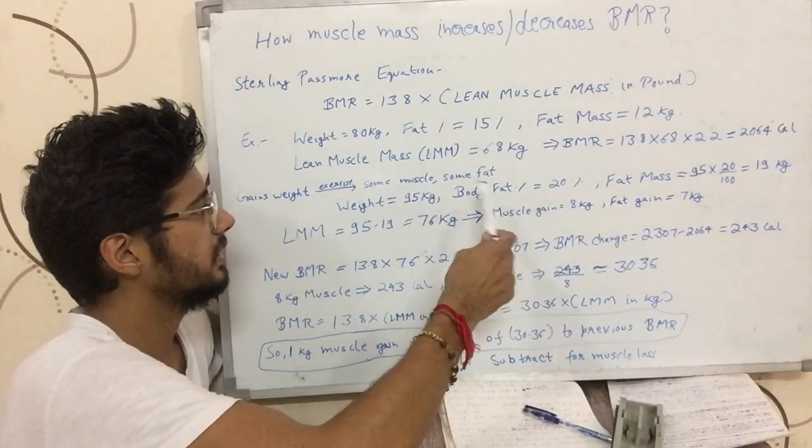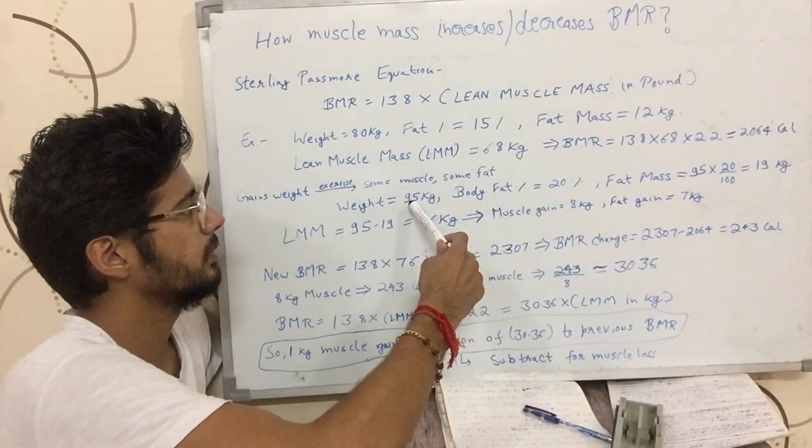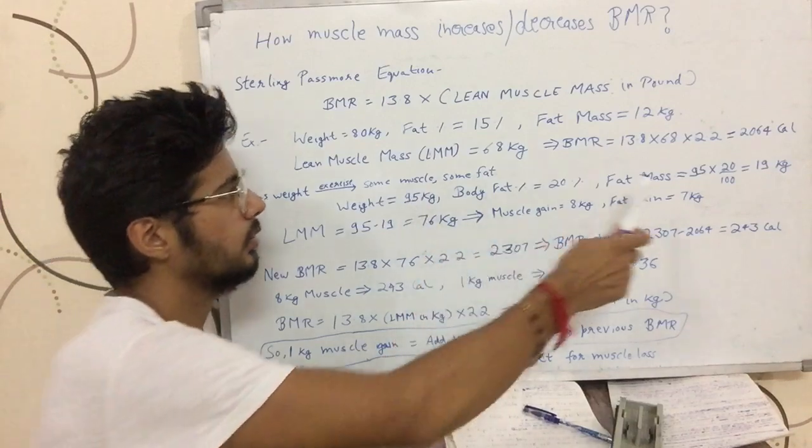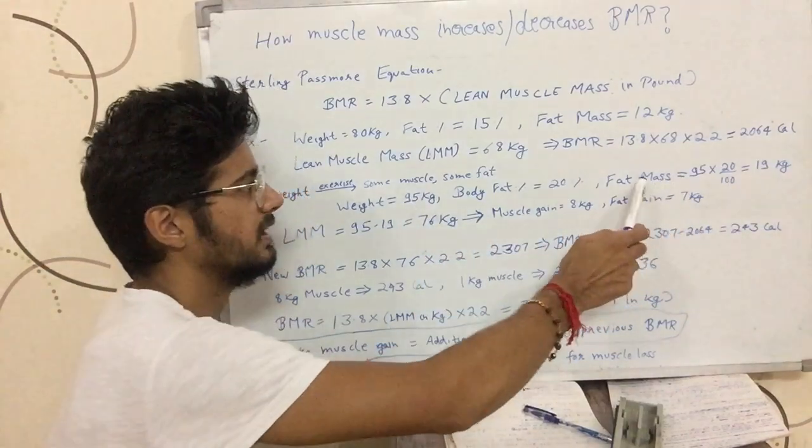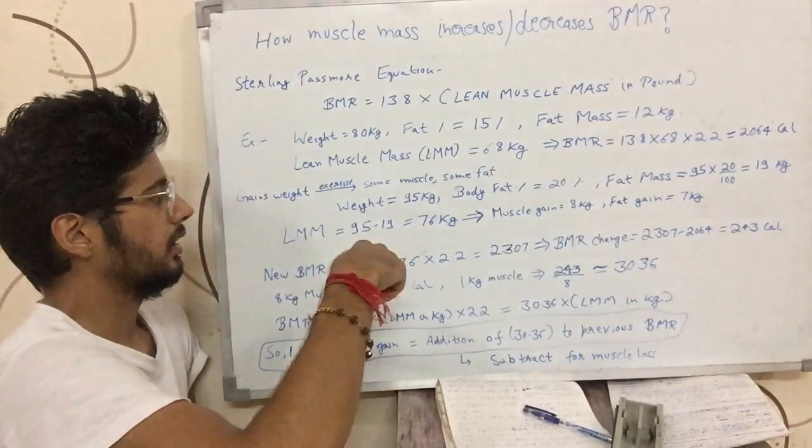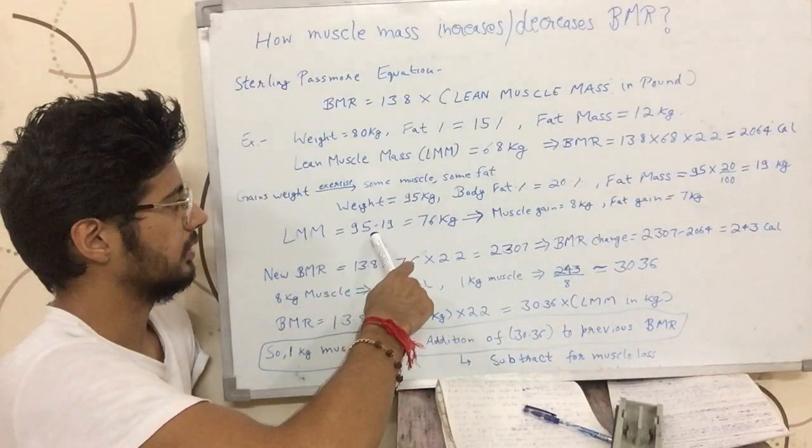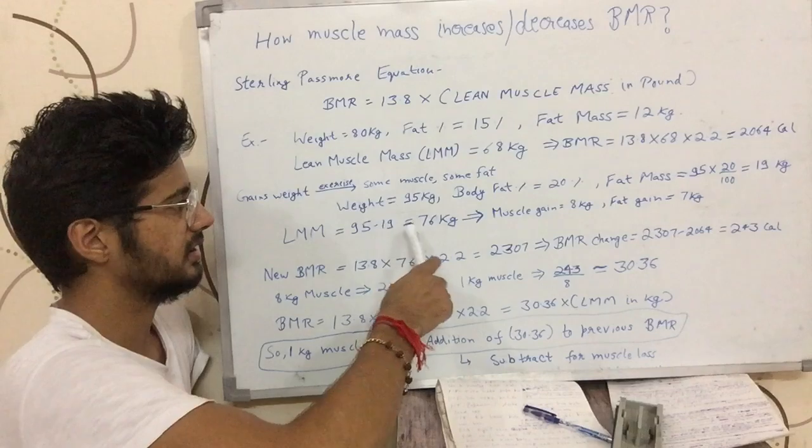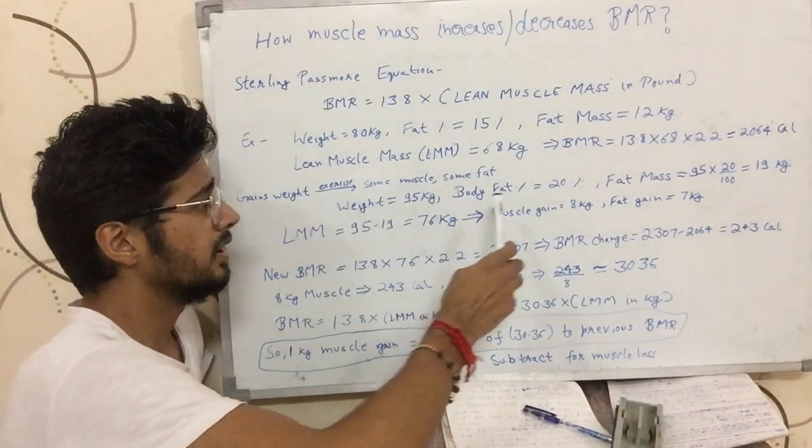Now, 20% of 95 kgs would be 9.5 plus 9.5, which is 19 kilograms. That is the fat mass in his body. Remaining weight, 95 minus 19, is 76 kilograms of lean muscle mass.